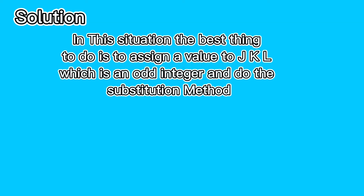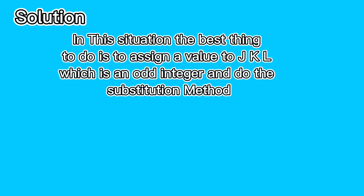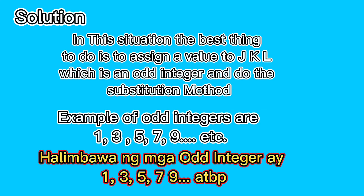Solution. In this situation, the best thing to do is to assign a value to J, K, L, which are odd integers, and do the substitution method. Examples of odd integers are 1, 3, 5, 7, 9, etc.